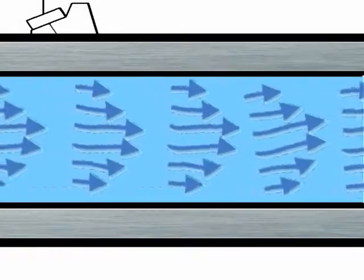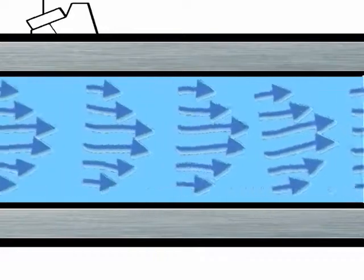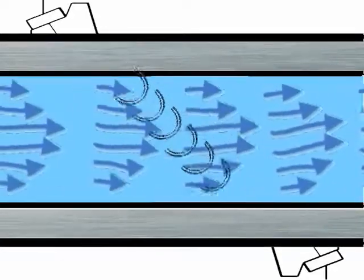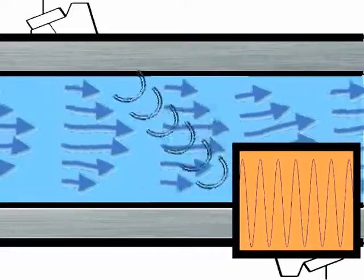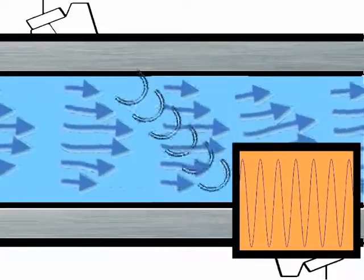Ultrasonic signals are highly directional. Providing the pipe material and the fluid in the pipe conducts ultrasonic signals, an ultrasonic signal transmitted across the pipe can be received on the other side of the pipe.